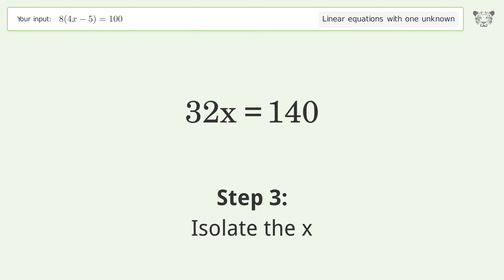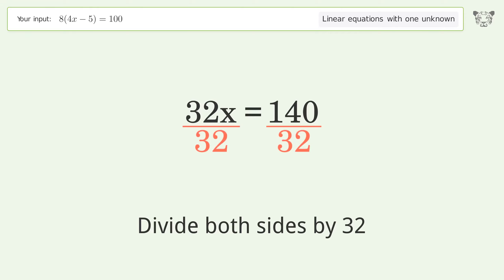Isolate the x. Divide both sides by 32. Simplify the fraction.